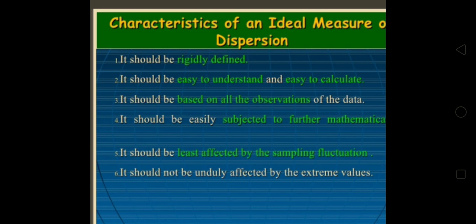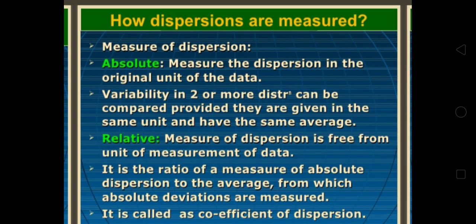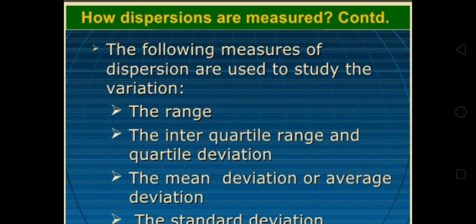It should be least affected by the sampling fluctuation and it should not be unduly affected by extreme values. How dispersion is measured: dispersion is measured with two methods - one is absolute, second is relative. The following methods are used: range, quartile deviation or interquartile range, mean deviation or average deviation, and standard deviation.